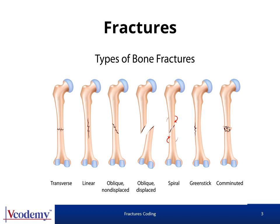A transverse fracture is one where the break is in a straight line across the bone. A spiral fracture spirals around the bone and is common in twisting injuries. An oblique fracture has a diagonal break across the bone. In a compression fracture, the bone is crushed, causing it to appear wider or flatter. A comminuted fracture means the bone has broken into three or more pieces with fragments present at the fracture site. A segmental fracture occurs when the same bone is fractured in two places, leaving a floating piece of bone.